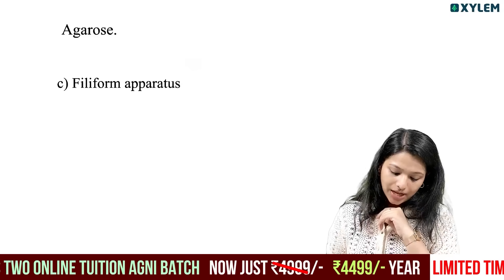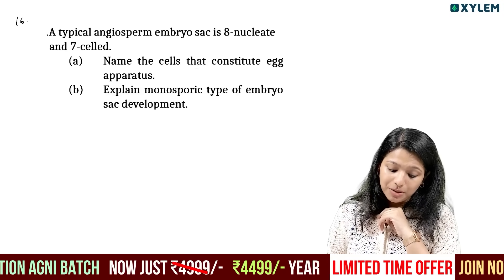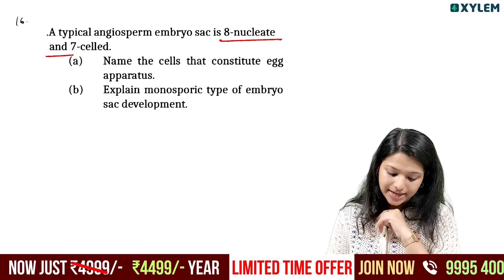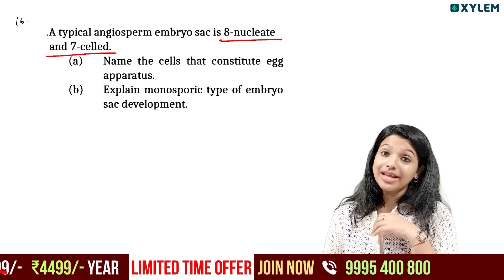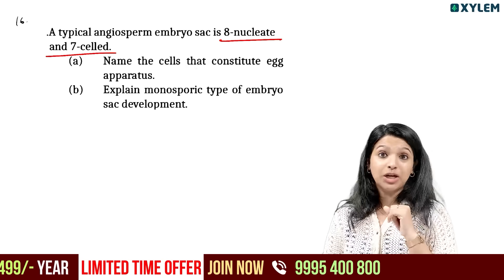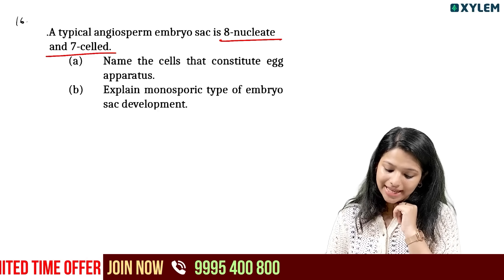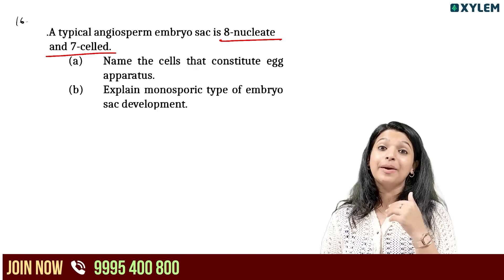A typical female gametophyte (embryo sac) is 8-nucleated and 7-celled. Name the cells that constitute the egg apparatus. This is the egg apparatus.